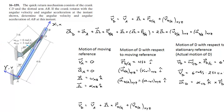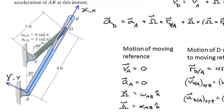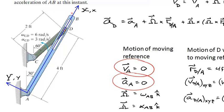I've already established a stationary axis represented by capital X and Y, and right on top of it I've established a rotational axis about point A, symbolized by little x and little y. So the motion of the moving reference — this little x, little y coordinate system — its base, point A, is not moving. Its velocity and acceleration are both zero. But this axis is rotating at the same angular velocity as AB.